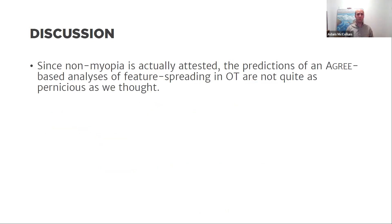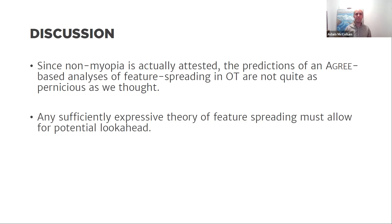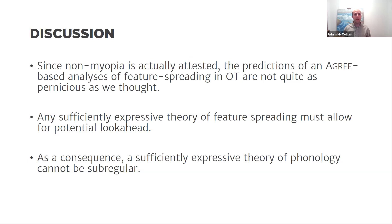Thinking back to the original problem with the agree-based analysis in OT: if these kinds of non-local global interactions are present, the predictions aren't quite as bad as we thought — non-myopia does exist in harmony. We find nothing that looks exactly like the sour grapes prediction, but things closer to it than what we thought twenty years ago. Consequently, any sufficiently expressive theory of feature spreading must allow for potential look-ahead. And as it relates to the sub-regular program, any sufficiently expressive theory of phonology cannot be categorically sub-regular over string-based representations.